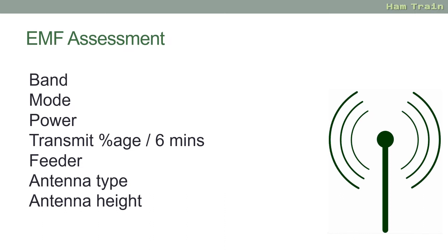You then look at the feeder — what type of feeder you're using and how long the run is between your transmitter and the antenna. Then you need the antenna type and how high up your antenna is.